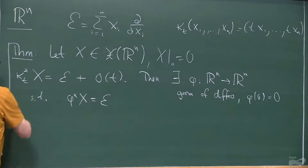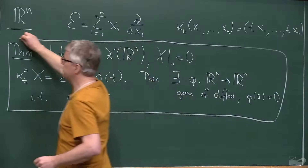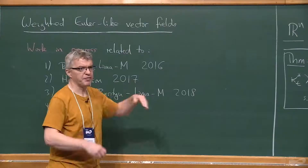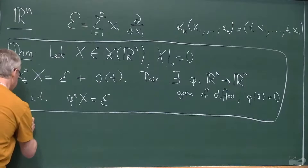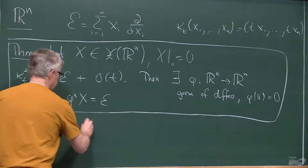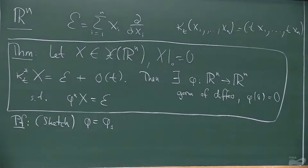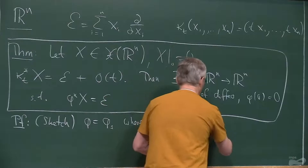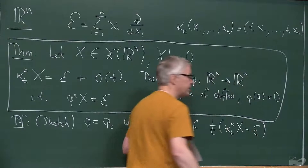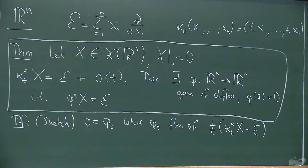This theorem follows from a general result about linearizations of vector fields — a classical result of Sternberg — but in our paper we gave a very simple proof of this special case. As a sketch: this diffeomorphism is obtained as the time-one flow of a time-dependent vector field, which is (1/T) times kappa_T pullback X minus E. So it's very explicit — you introduce this vector field, you take the time-one flow, and that diffeomorphism does the job.